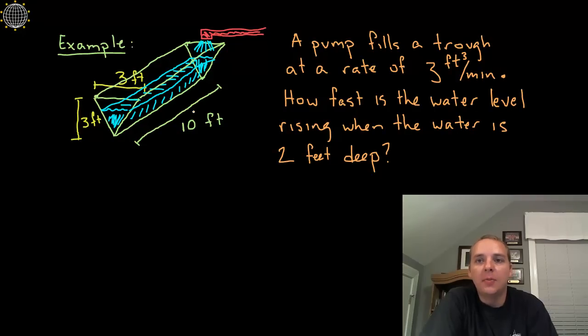Here we've got a related rates problem that says a pump fills a trough with water at a rate of 3 cubic feet every minute. So they tell us something about the rate, so this is a related rates problem. It asks us how fast is the water level rising when the water is 2 feet deep. Depending on how fast this water comes into the trough, that's going to influence how fast the water level rises. They want to know how fast is that water level rising when the depth is 2 feet.